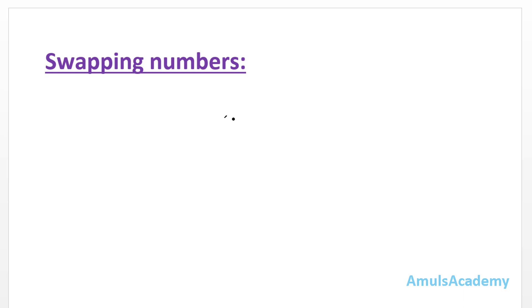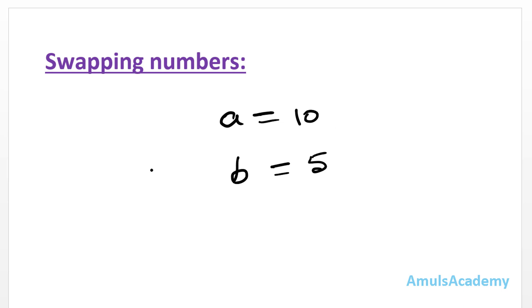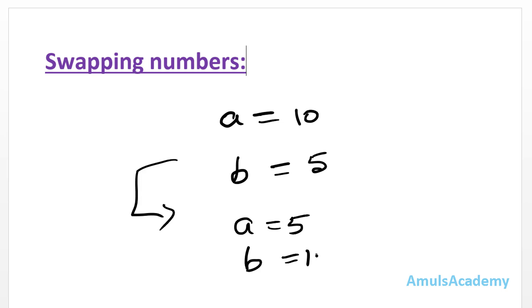In our program we will take input — for example, if I take variable a with value 10, and another variable b with value 5. I want the output to have a equal to 5 and b equal to 10. I want to swap these two numbers.